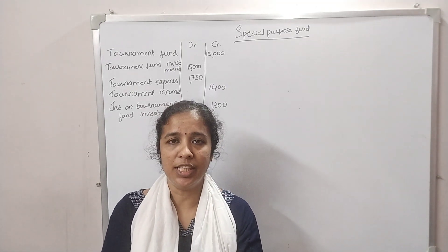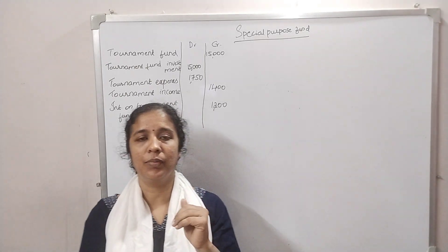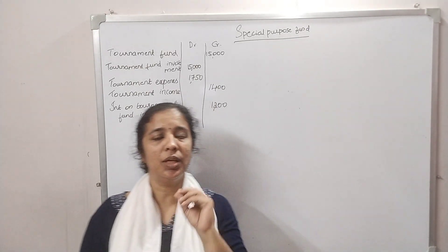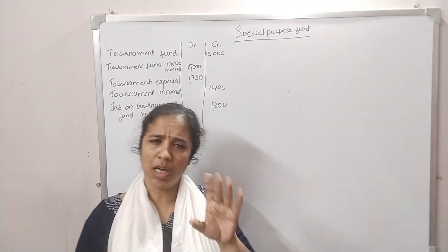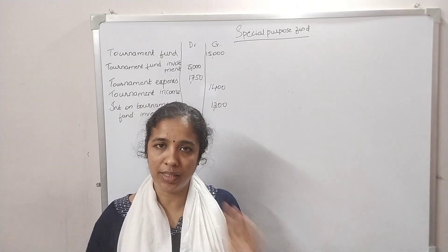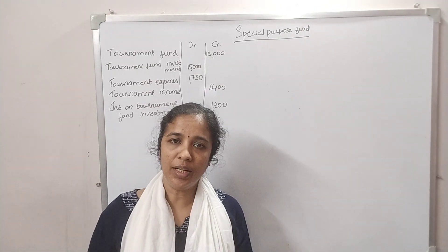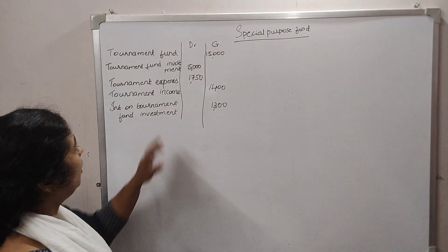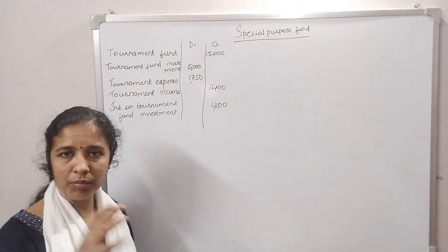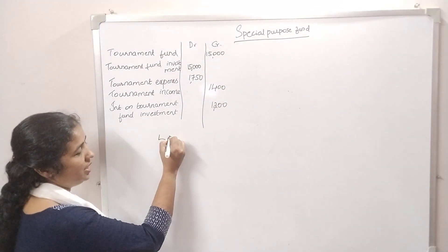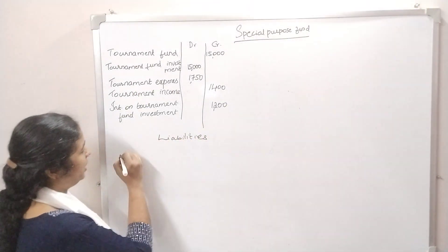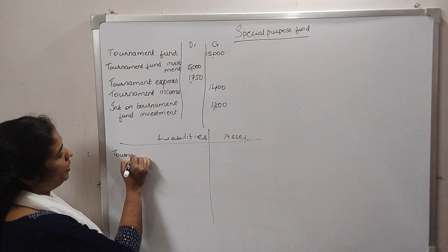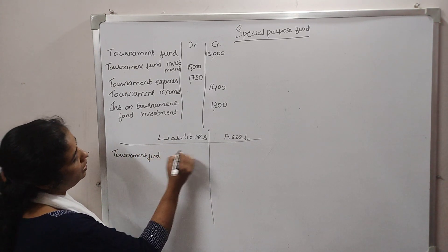This is a fund. You have to put all the expenses from the fund. We can add the extra expenses in this account. The tournament fund is $15,000. The fund is a liability — it appears on the balance sheet as a liability. Then we have the tournament fund of $15,000.